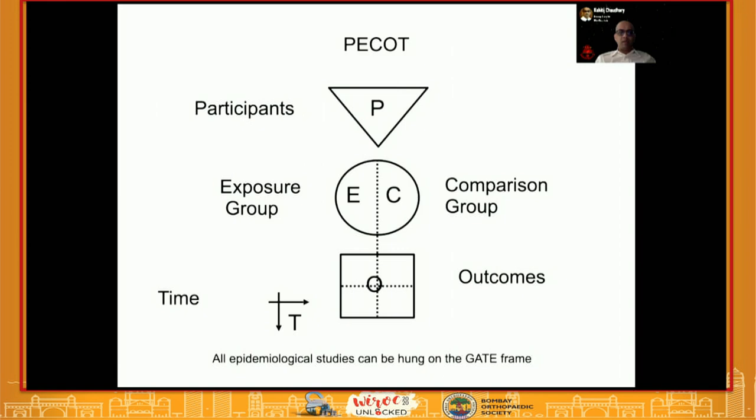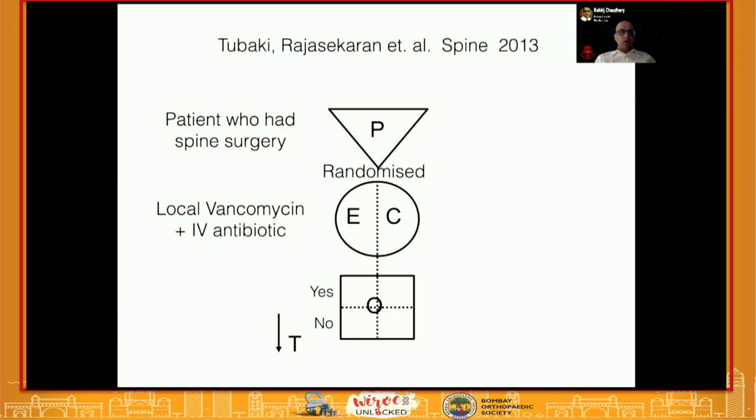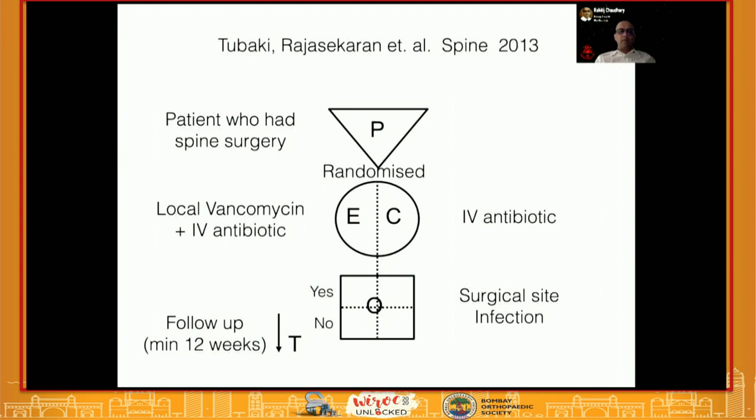For example, this is a study by Dr. Raj Shekharan in Spine 2013, where they looked at all patients who had spine surgery. They randomized patients into two groups: the exposure group had local intracyte vancomycin powder plus IV antibiotics, and the control group had IV antibiotics only.